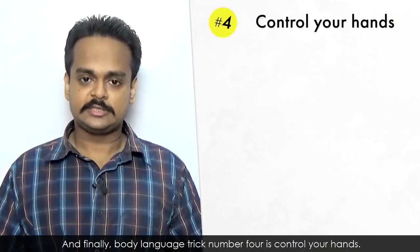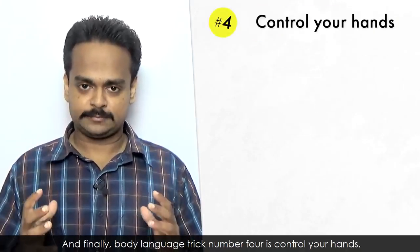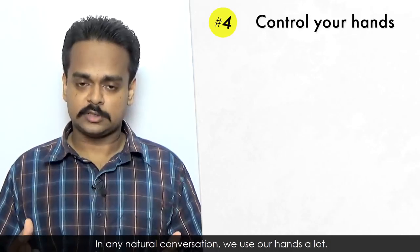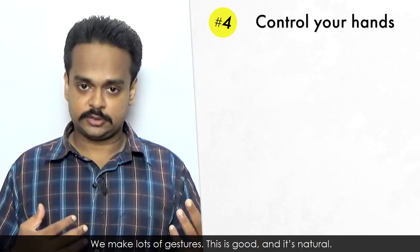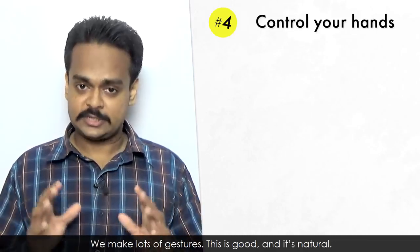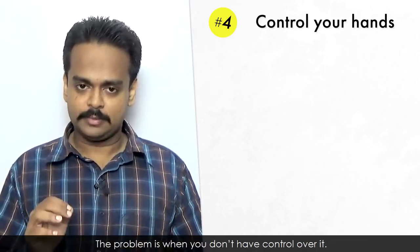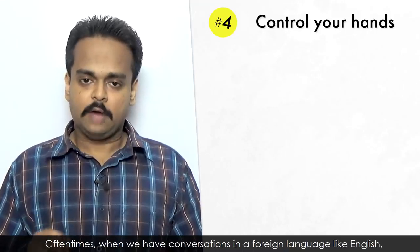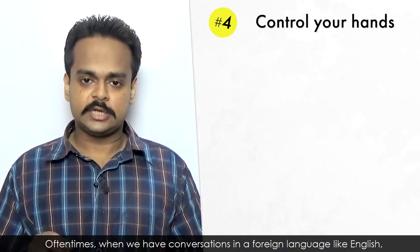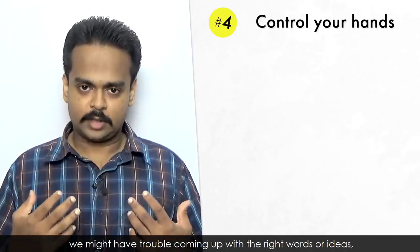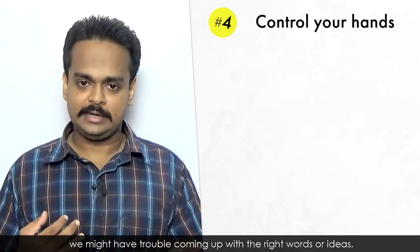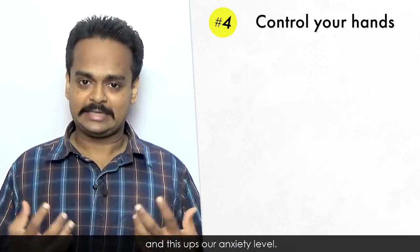And finally, body language trick number four is control your hands. In any natural conversation, we use our hands a lot. We make lots of gestures. This is good and it's natural. The problem is when you don't have control over it. Oftentimes, when we have conversations in a foreign language like English, we might have trouble coming up with the right words or ideas, and this ups our anxiety level.